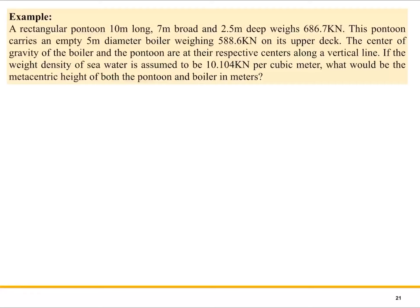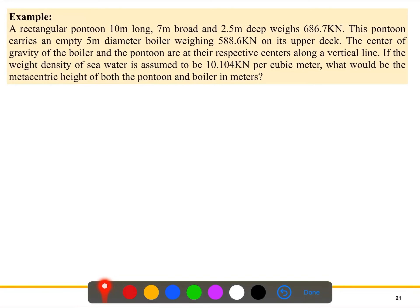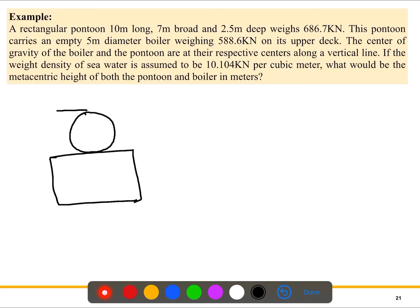We'll solve the problem where we calculate the metacentric height and see whether it is stable or not. We have a rectangular pontoon with all dimensions given. This pontoon carries an empty five-meter diameter boiler on top of it. We know the weight of the rectangular pontoon and the boiler, and the centers of gravity of the boiler and the pontoon are at their respective centers along a vertical line.